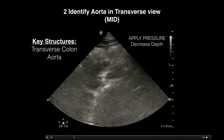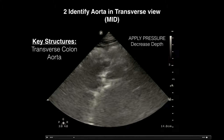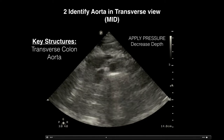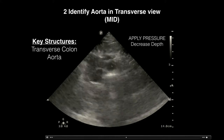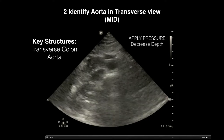As you go more distal, you reach the mid aorta — probably the hardest portion to view since there's so much transverse colon anterior to the descending aorta. Apply pressure and decrease your depth a little bit, because as you scan more distally the aorta becomes more superficial — around six to seven centimeters at the mid level. There may be a lot of bowel gas, but applying pressure will bring out the abdominal aorta for visualization.